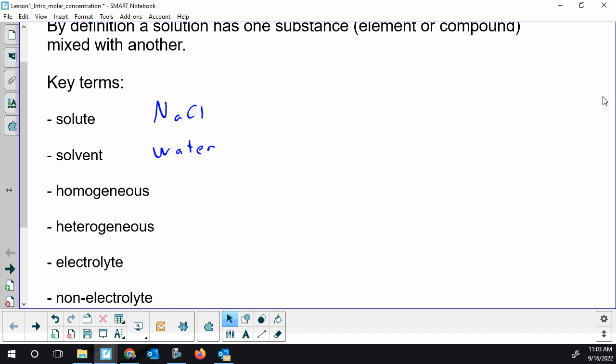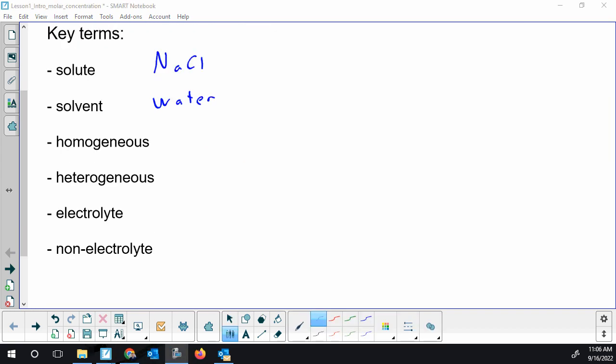Next, we'll go over homo and heterogeneous. So, we really want to look at the root of the next two words. As a prefix, homo means one and hetero means many.